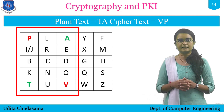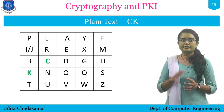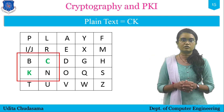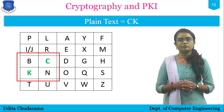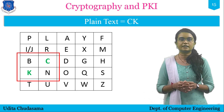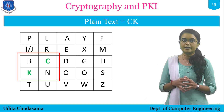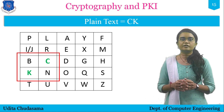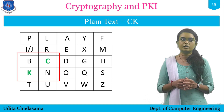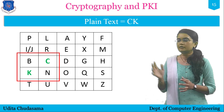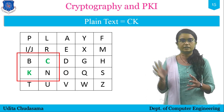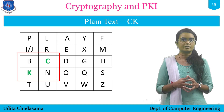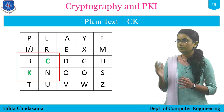Next pair is CK. We locate C and K in the matrix and form a rectangle. Encrypting C: we find the letter in the same row of C at the corner of the rectangle, giving B as cipher text for C. For K: we find the letter in the same row at the other corner, giving N as cipher text for K. So the pair CK encrypts as BN.